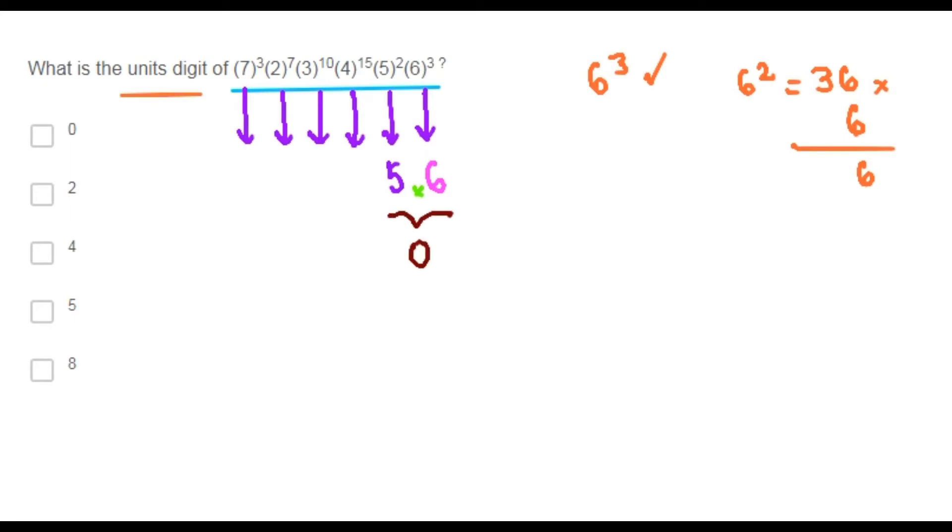So, since here we have 0 times the unit's digit of all these powers, we know that the product will be 0 at the end. Therefore, choice A is correct.